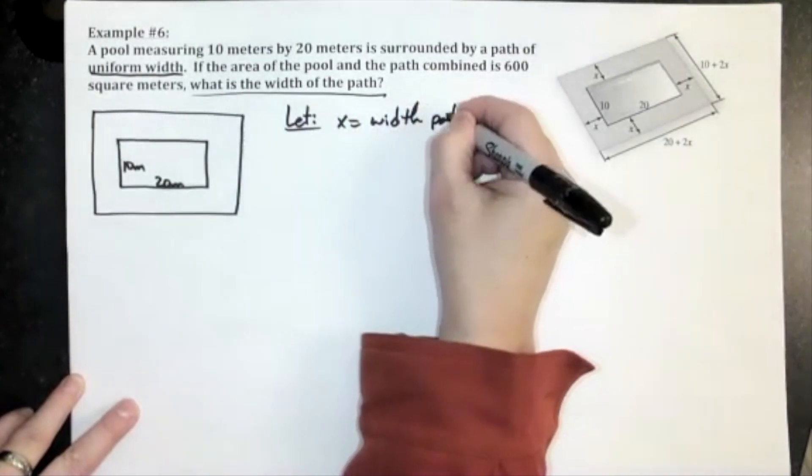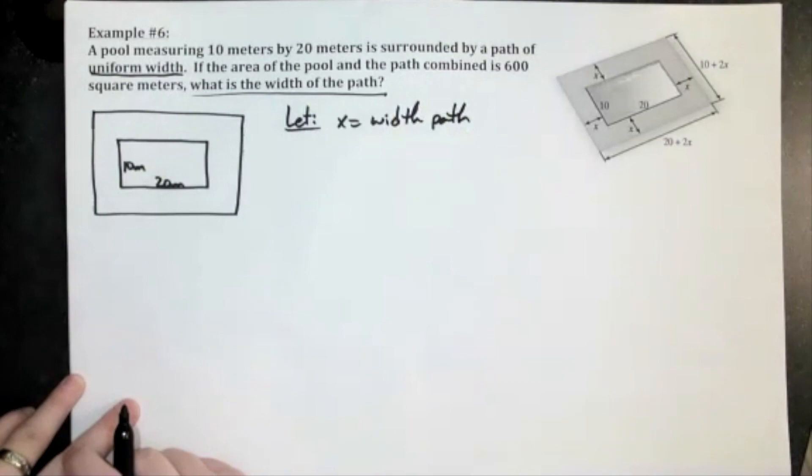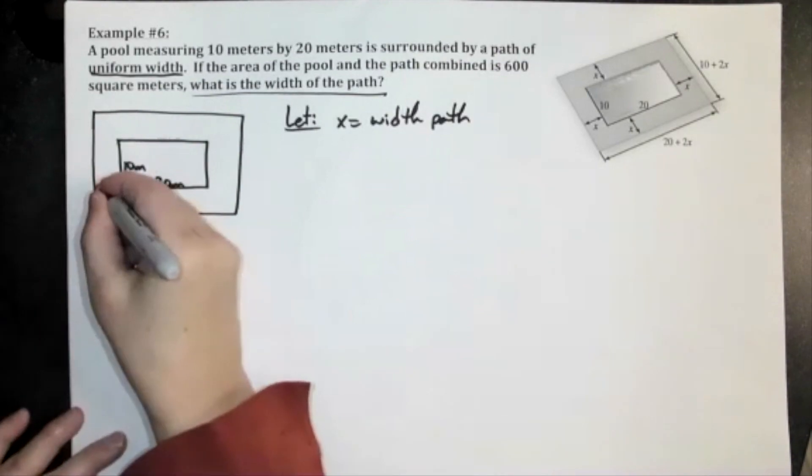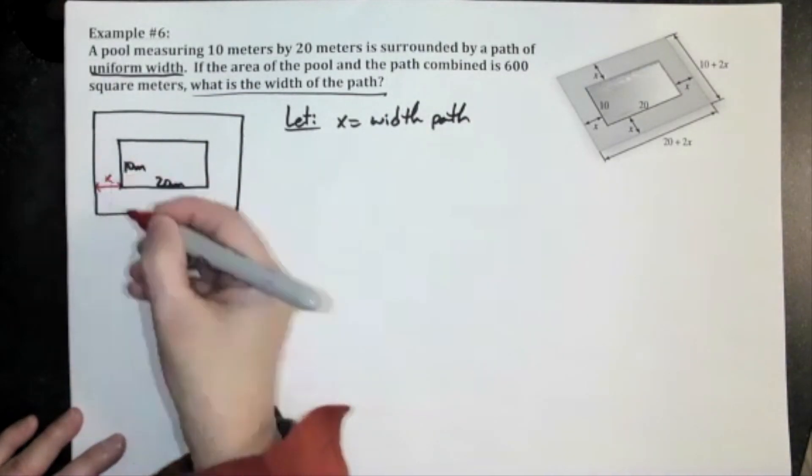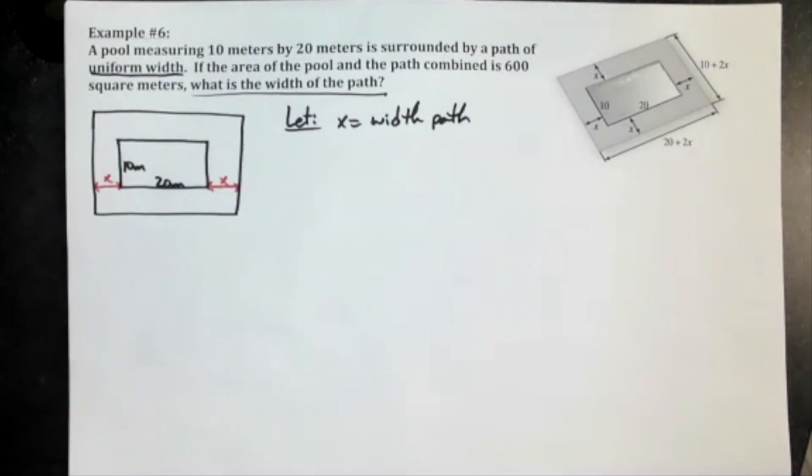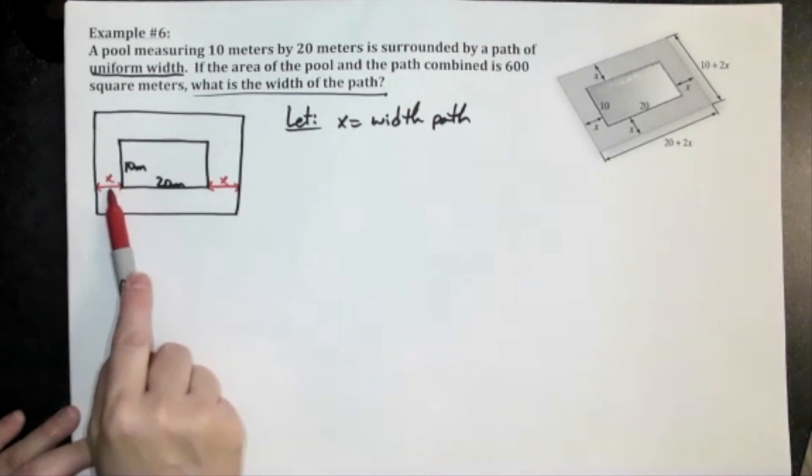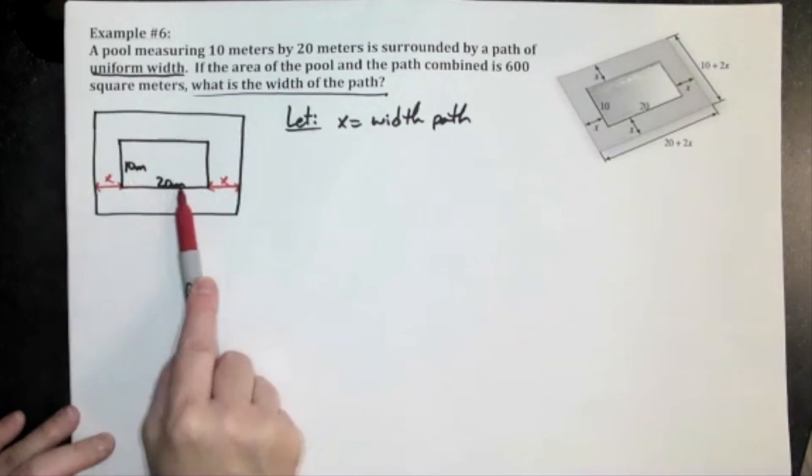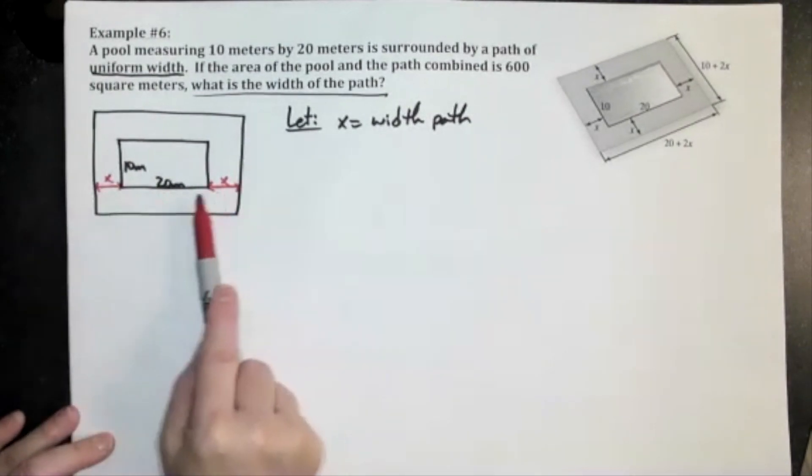Now it's a uniform width and I don't know what the width is because it's asking for the width. I may even do this, let's kind of color code this. So that means from here to here is x and from here to here is x because it's going to be the same width all the way across. Now what that does for me, I put it here so that we could kind of see the distance all the way across.